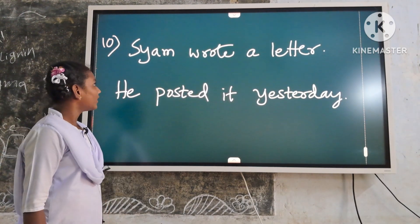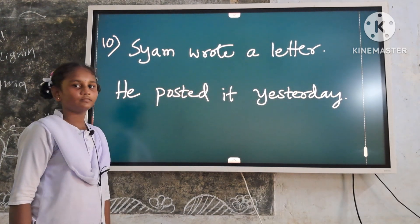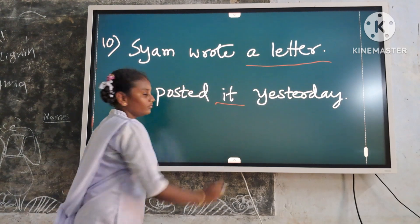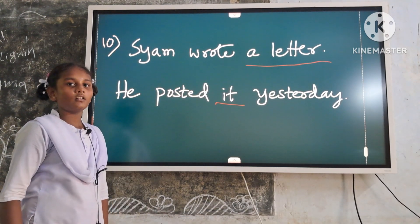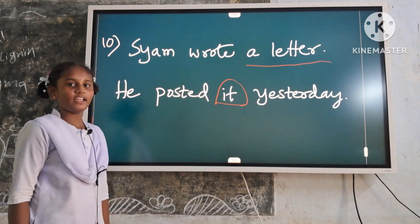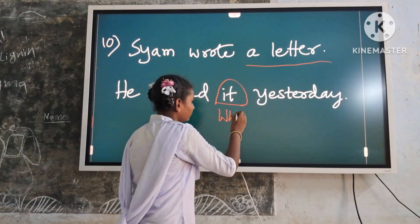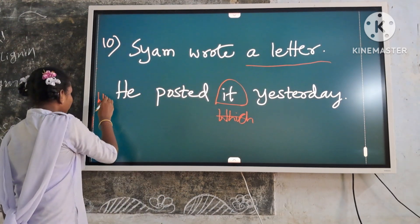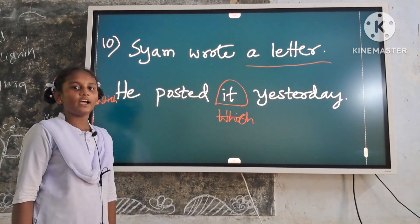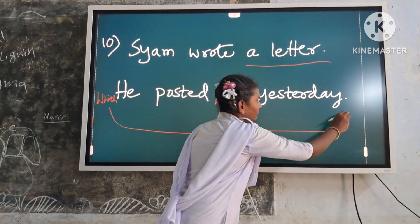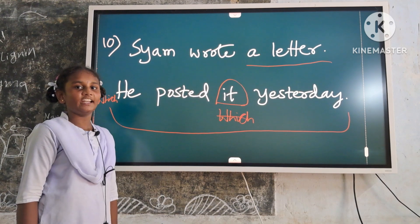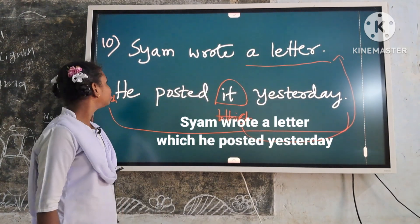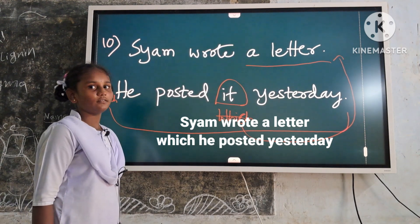Now tenth example: Sam wrote a letter. He posted it yesterday. Here the noun phrase is 'a letter.' Related pronoun: it. Round off the related pronoun in the second sentence. Replace it with which. Keep which at the beginning of the second sentence. Keep the entire second sentence in the bracket. Keep the entire second sentence beside the identified noun phrase of things. Now the answer is ready: Sam wrote a letter which he posted yesterday. Thank you.